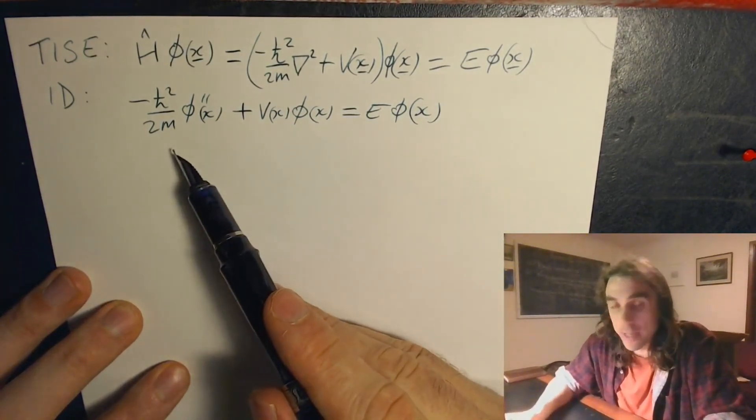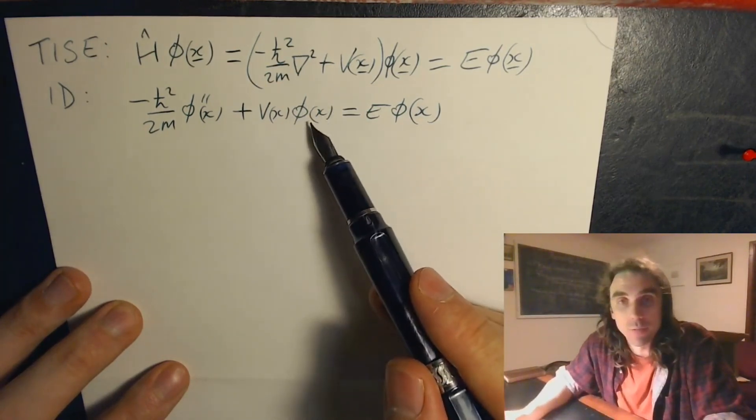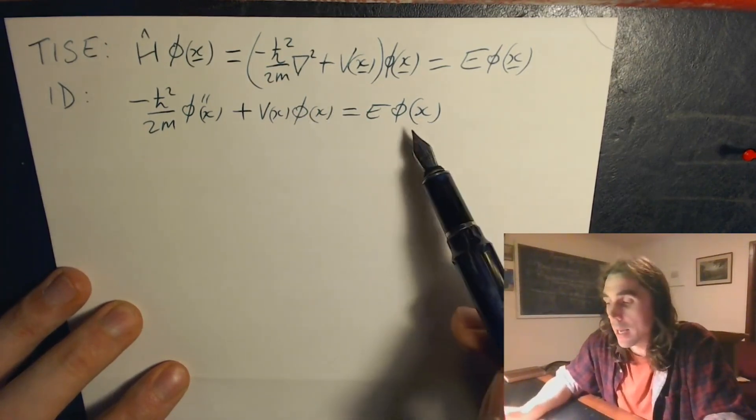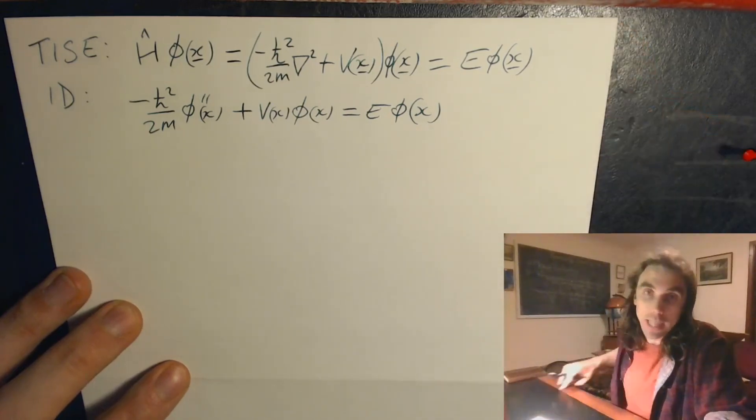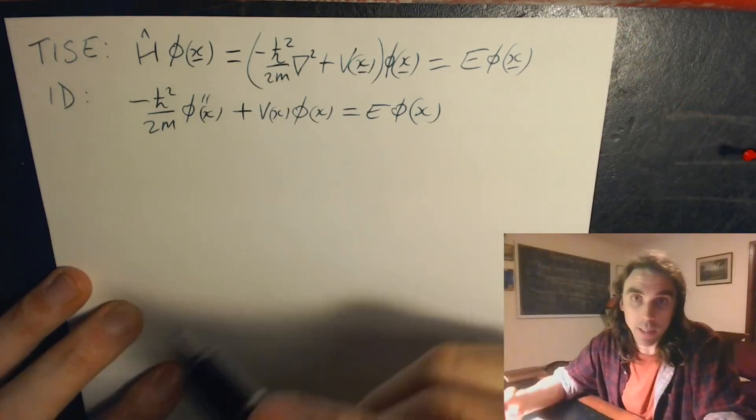It's an eigenvalue problem. We need to find the eigenfunctions phi which solve this equation, and the corresponding eigenvalues e, which will be the energies of the system, the energies the particle can take.